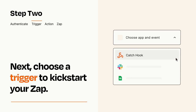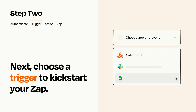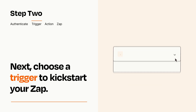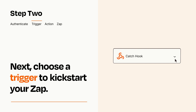Now let's set up your trigger, which is the event that starts your Zap. Pick the trigger event that you want from the list. When you set up this step, your Zap will pull in test data from your trigger app that you'll see later when setting up your action app.